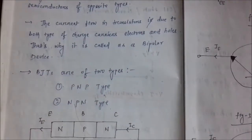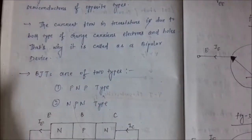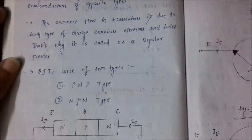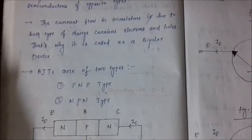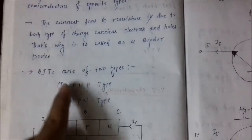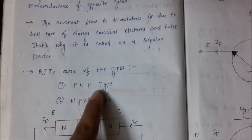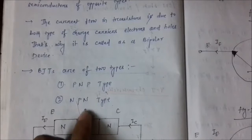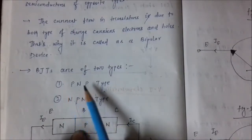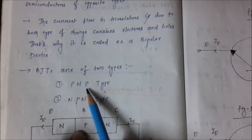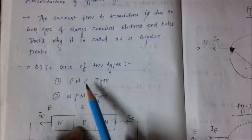The BJTs or bipolar junction transistors are of two types. First is the PNP type, which is formed by sandwiching an n-type semiconductor in between two p-type semiconductors.